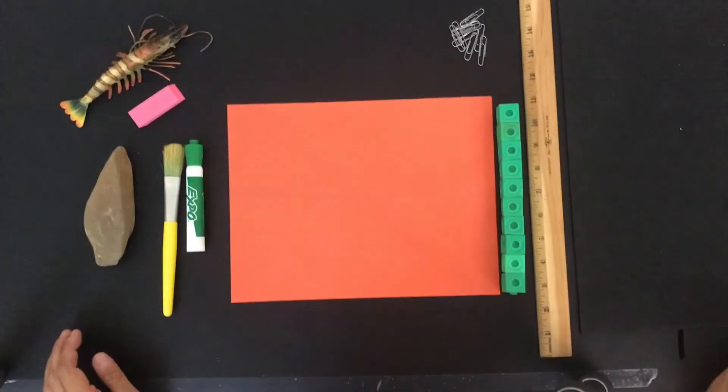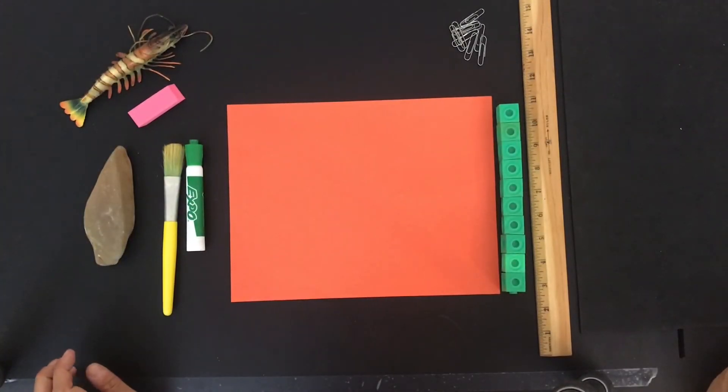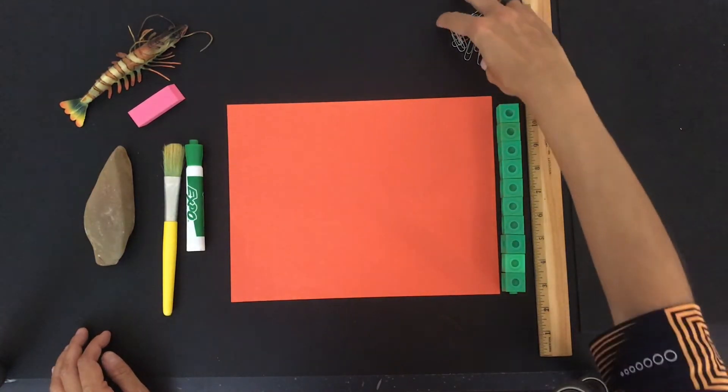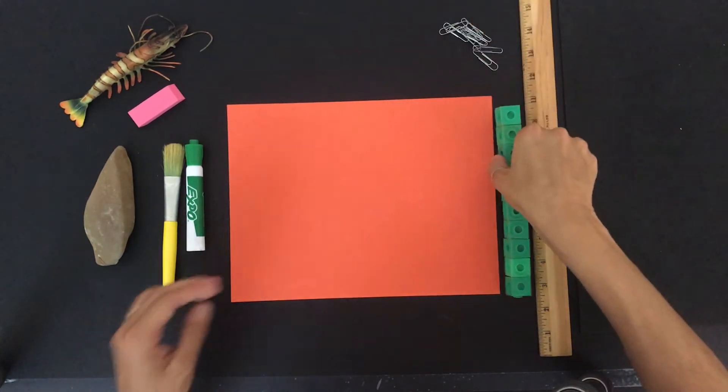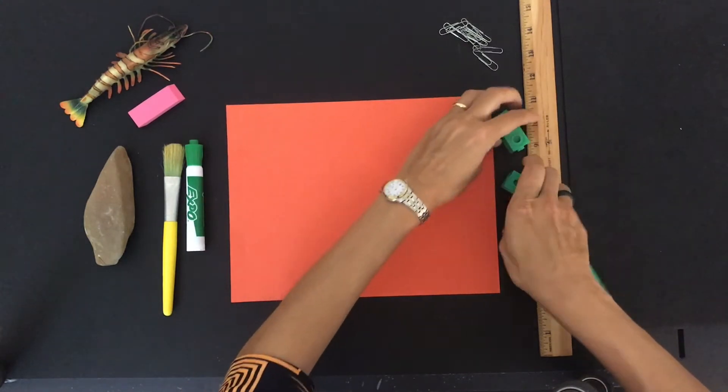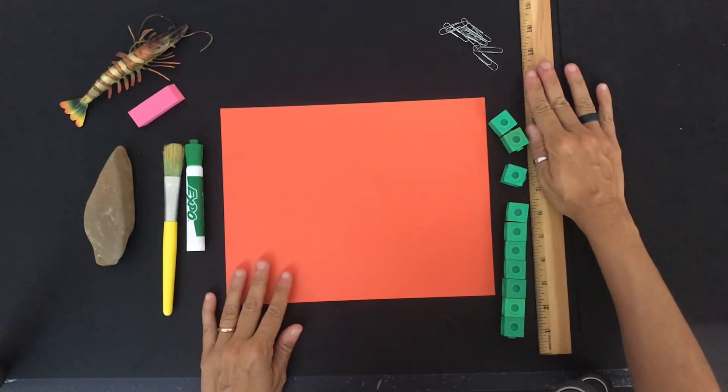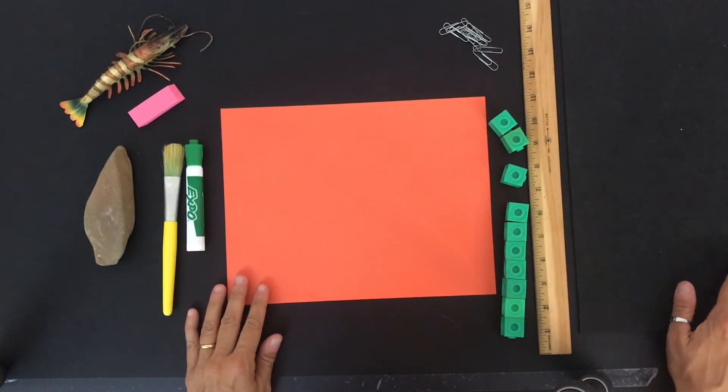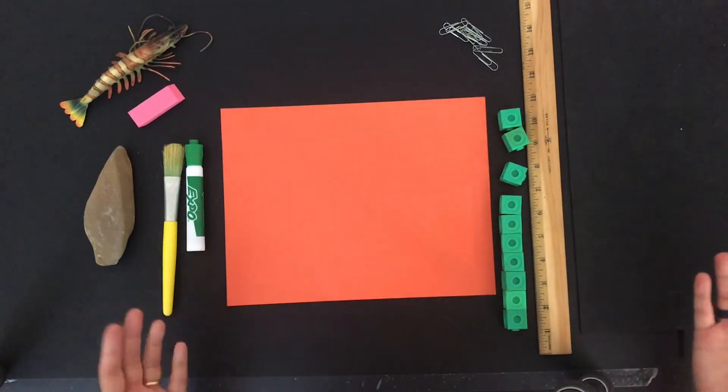Have you ever measured anything before? Come along. I'll show you how. I hope you enjoyed that story about the inchworm. Let's try measuring together. So what you'll need is either some paper clips or unifix cubes or a ruler to measure. And I'm going to show you how to use all three tools for measuring.